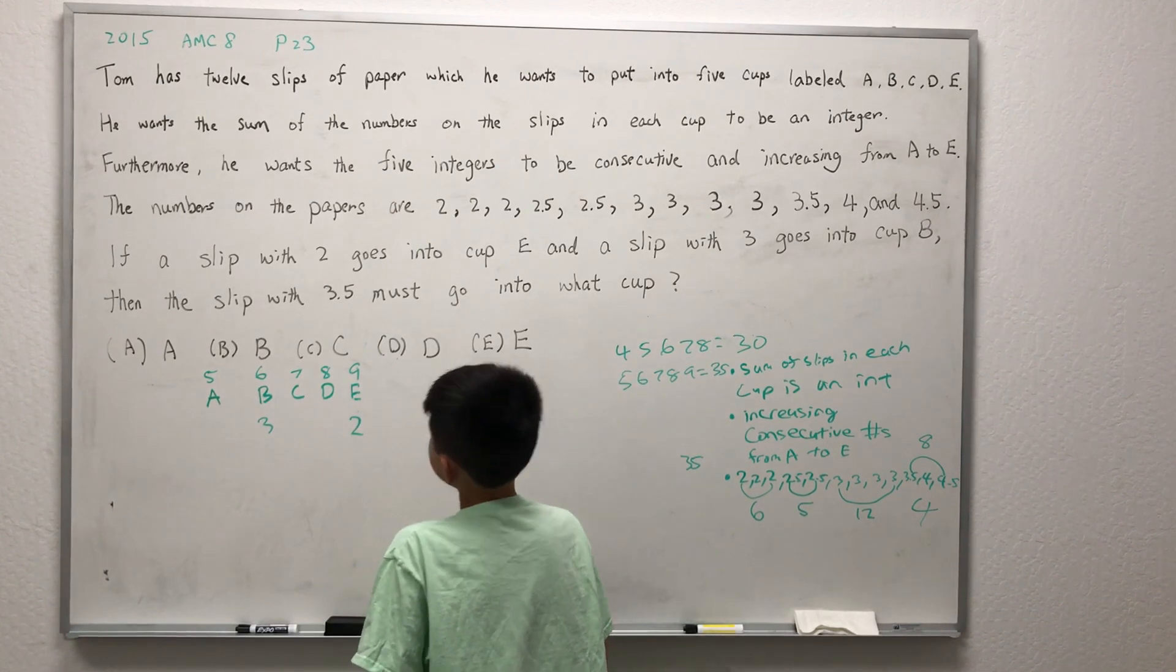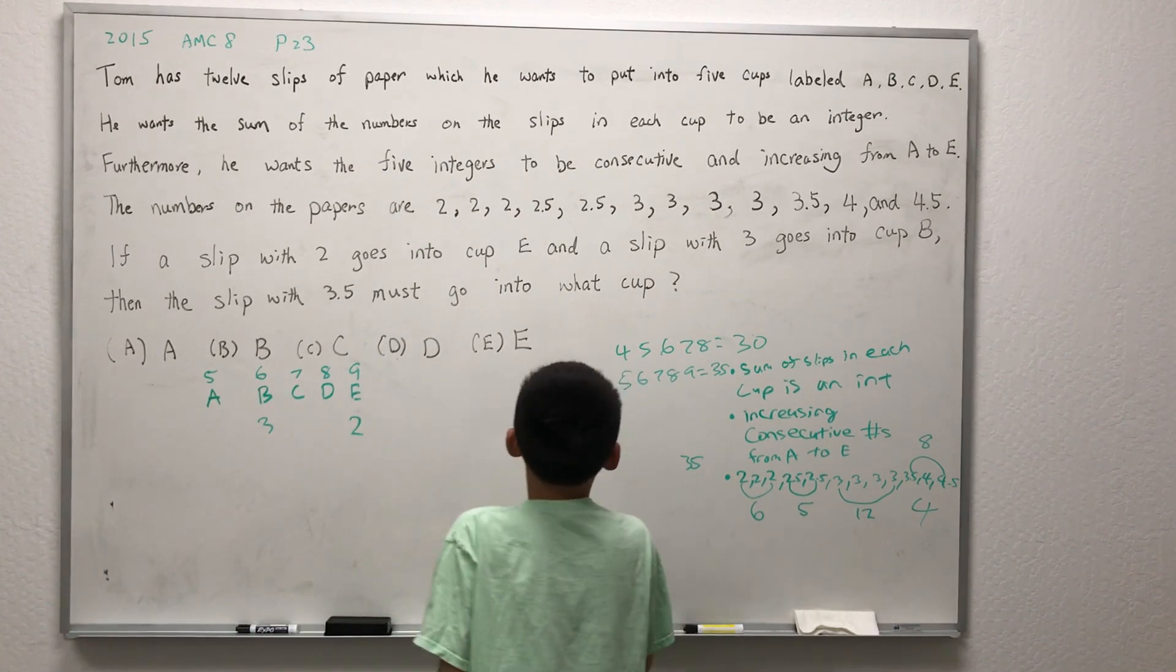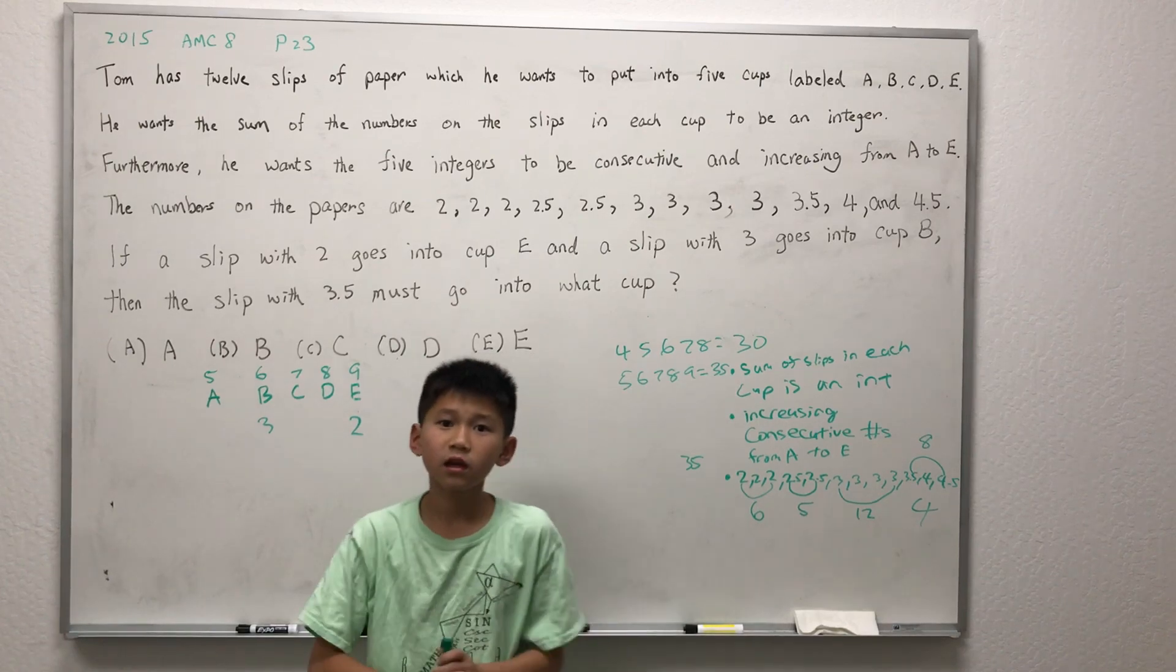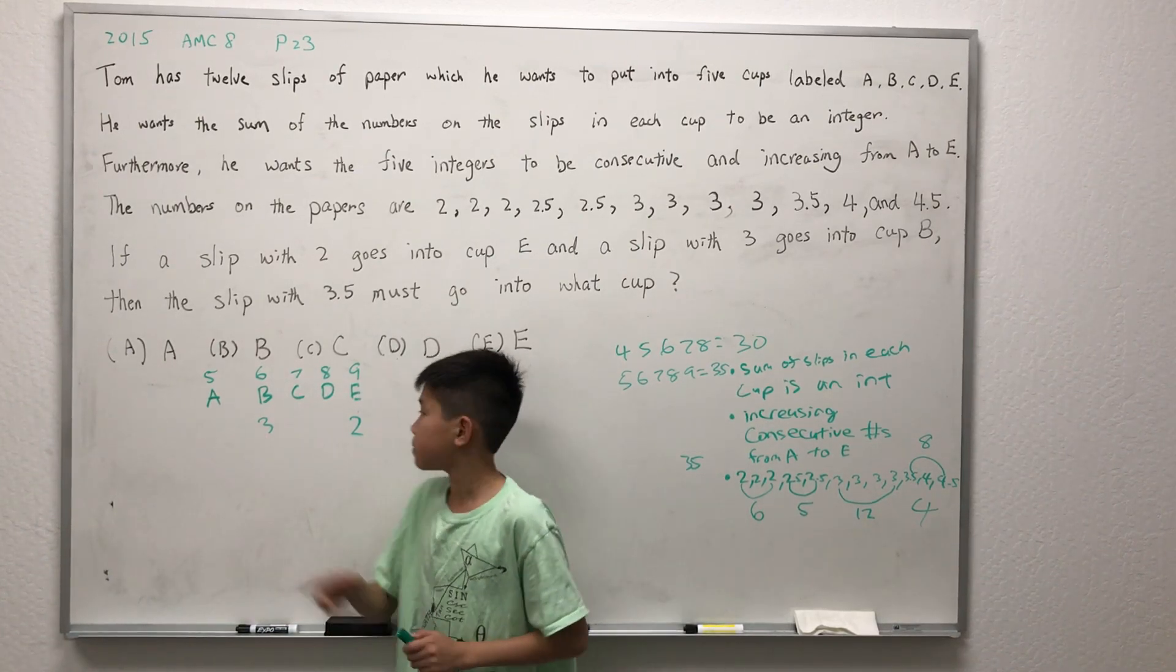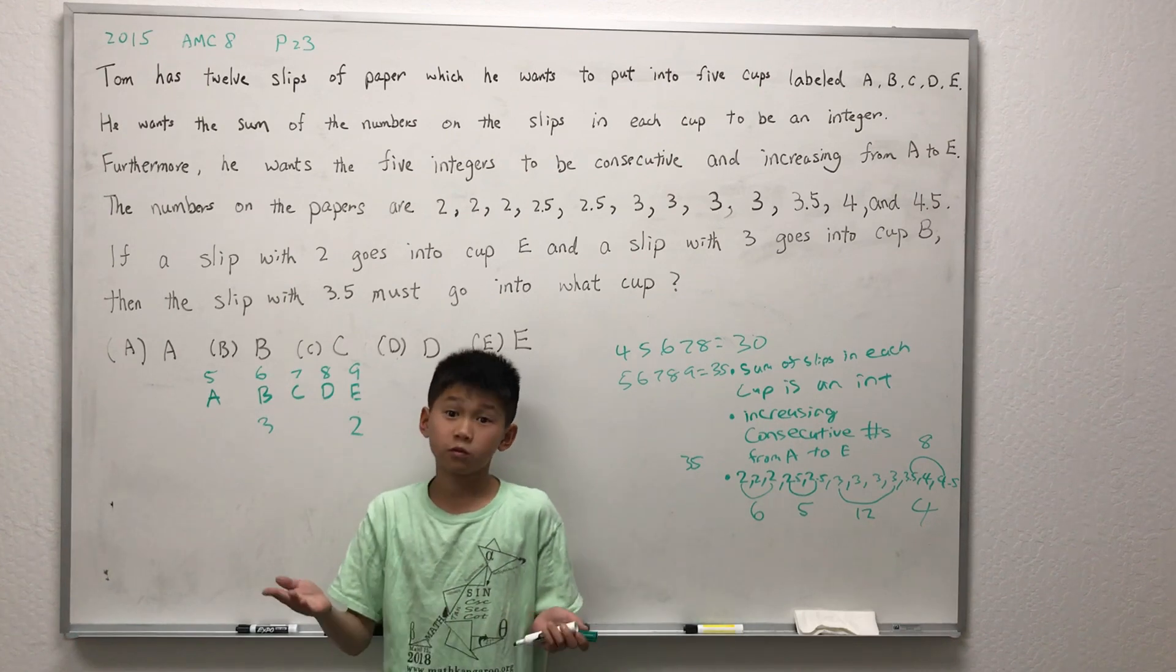Let's read the question again. The slip of 3.5 must go into what cup? Let's try to plug in the value of 3.5 into each of the cups and see which one works out.